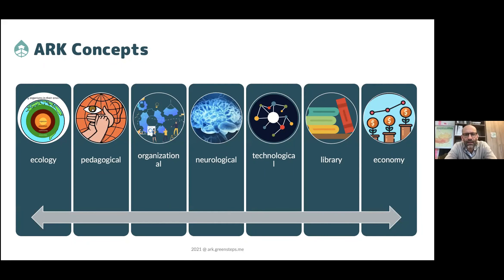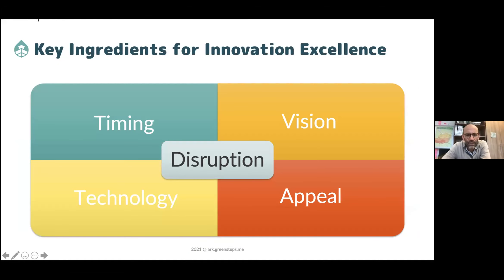Today we talk about badges. On this slide you see how traditionally innovation excellence is explained: you need the right time, the right vision, the right technology, and the right appeal. Today we talk about appeal. I always include that vision needs to correlate with good values — because if your vision is just to get more money out of others, those are probably the wrong values. And technology always relates to the right organization.